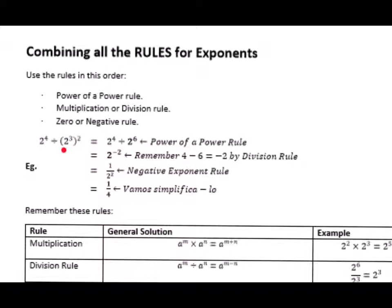For example, let's say I have this problem: 2 to the 4 divided by 2 to the 3, raised to the 2. The first thing we have to do is use the power rule. We're going to simplify this part of the equation first. Because it's power of a power, 2 to the 3 raised to 2 means the 3 and the 2 multiply together to get 2 to the 6.